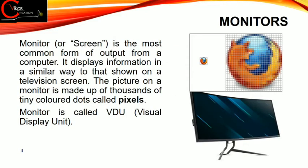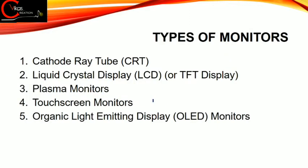In the previous class we discussed about monitors, where a monitor is a screen or display where we can see our data. The data we see on a display is termed as soft copy format. This display is made up of small dots called pixels. We discussed five categories: CRT, LCD, plasma, touchscreen, and OLED monitors.